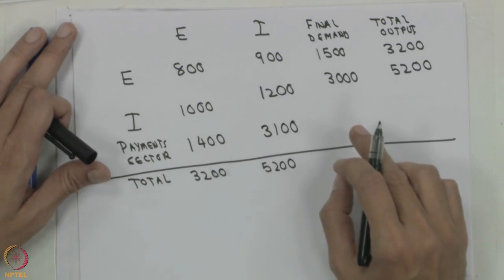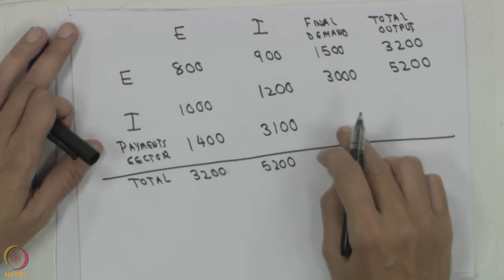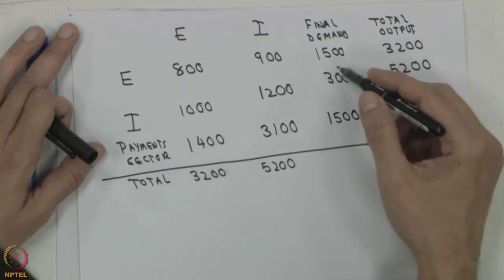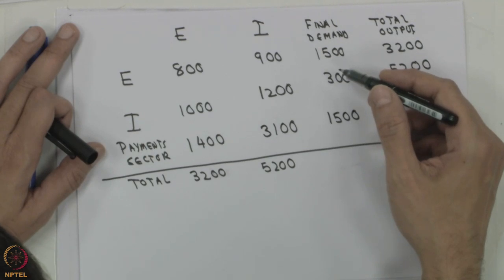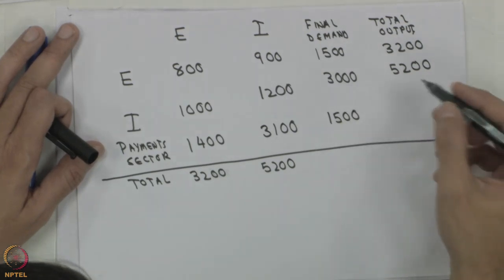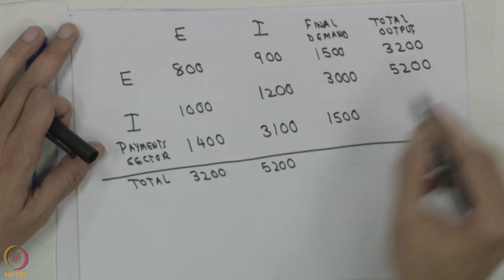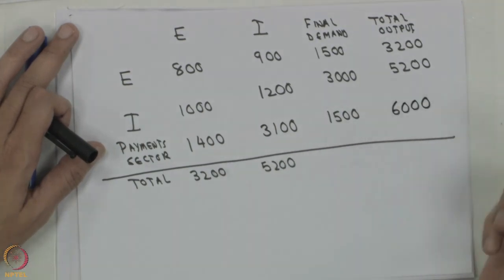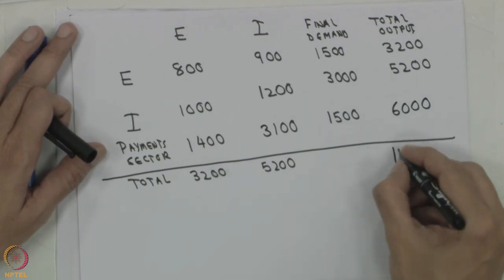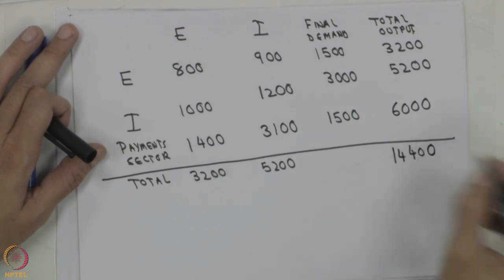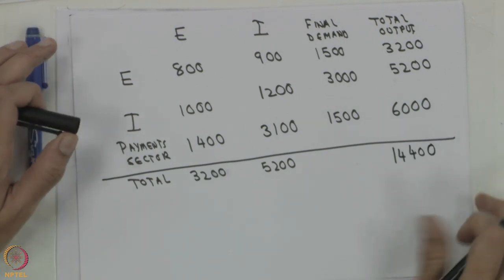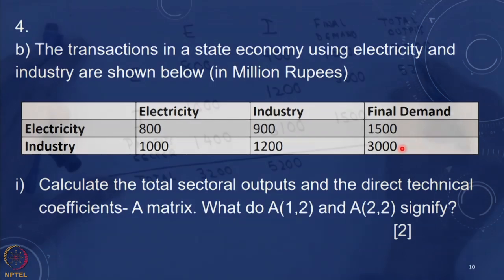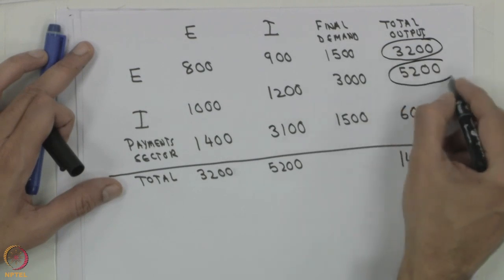The remaining entries for the payment sector can be computed once the table is complete. Total sectoral outputs are 3,200 million rupees for the electricity sector and 5,200 million rupees for the industry sector. These are the first answers.